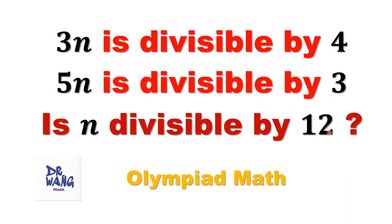12 is a product of 3 and 4. If here just n without 3, here just n without 5, this result is obvious too. But here we have extra 3 here, extra 5 here. How to solve this kind of question?